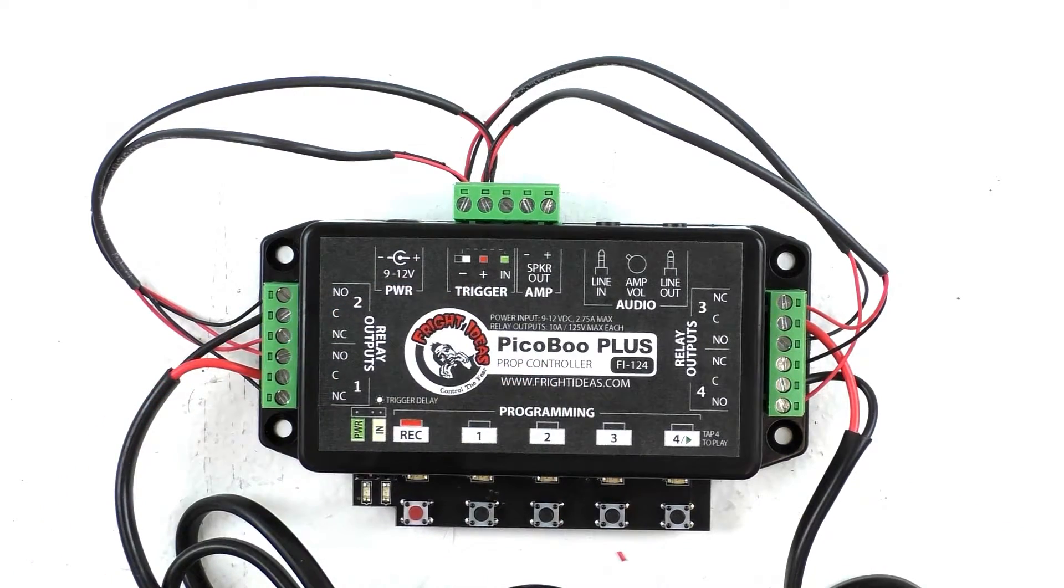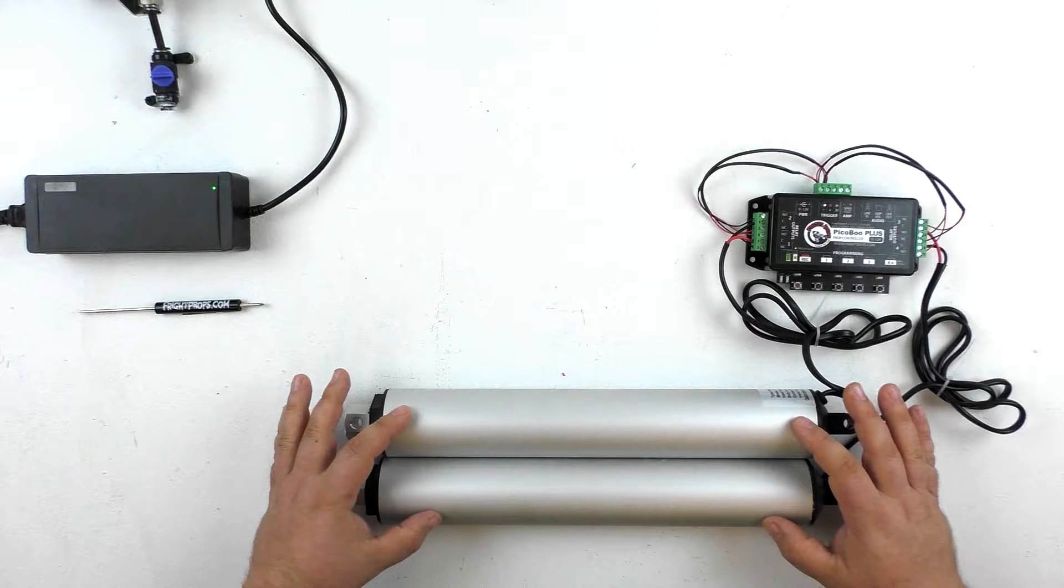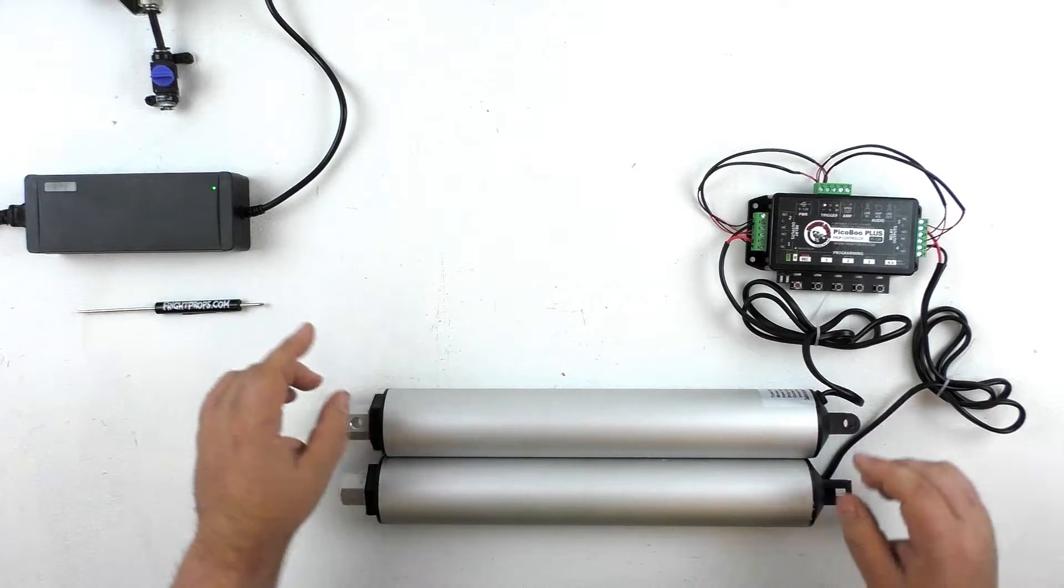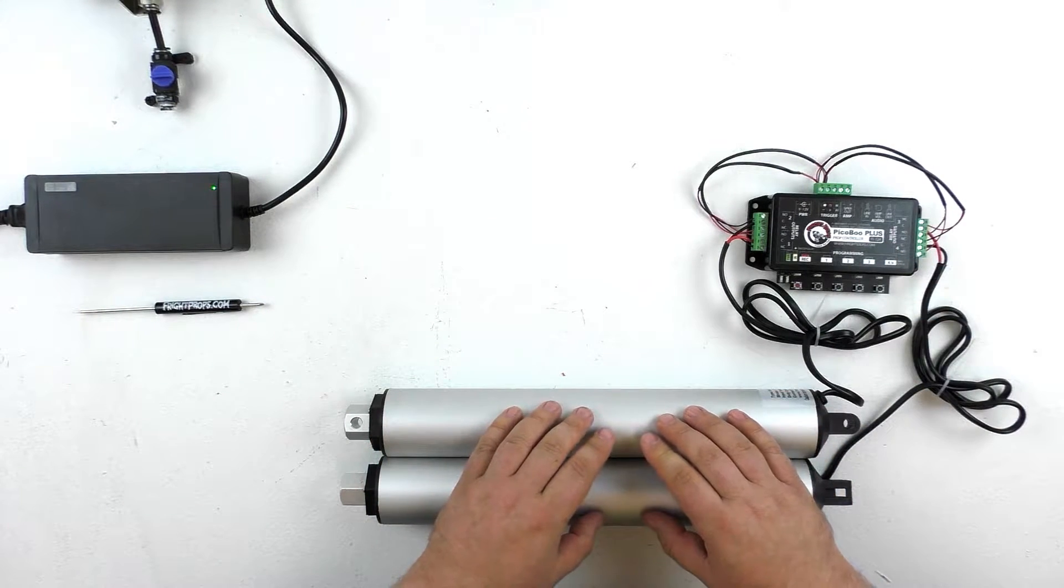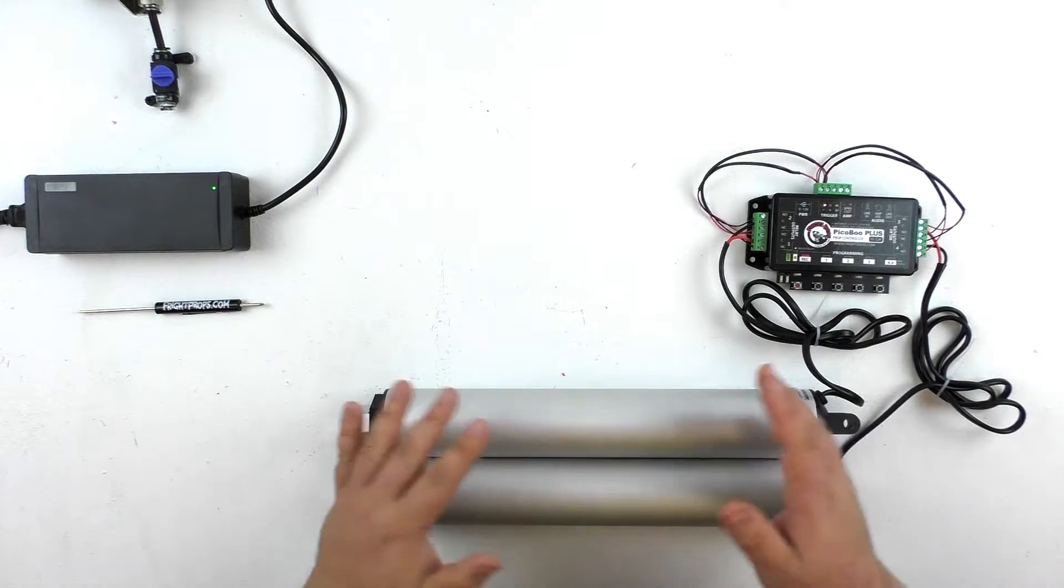Let's go ahead and take a look at it in action. Because both linear actuators can draw up to 5 amps under load, we're using a 12 volt 10 amp power supply. Now the Peekaboo Plus controller also needs some amperage to run, so we wouldn't recommend operating both linear actuators at the same time. It's better to operate one and then the other.